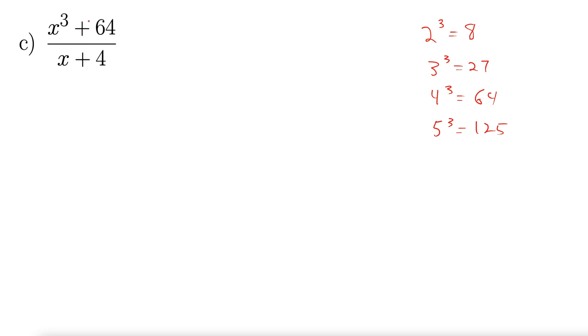x cubed plus 64 is the sum of cubes. There's a formula for that. Some call it the SOAP formula. a cubed plus b cubed equals a plus b. So this is same. And then it's a squared minus ab plus b squared. So opposite and then always positive. SOAP.